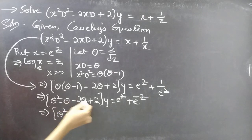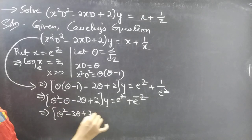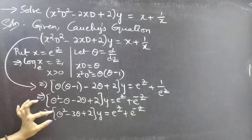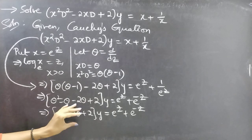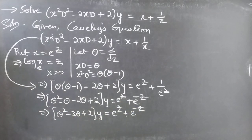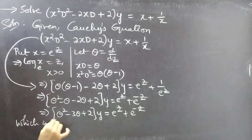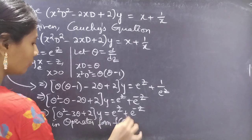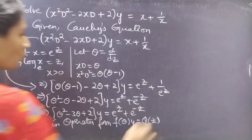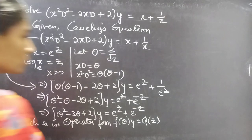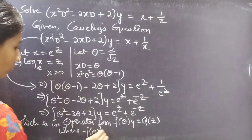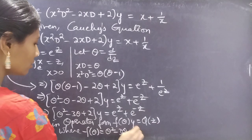So we get theta squared minus 3 theta plus 2 into y equals e to the power z plus e to the power minus z. This is a differential equation with constant coefficients, in operator form f(theta) into y equals Q(z), where f(theta) equals theta squared minus 3 theta plus 2.